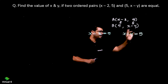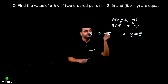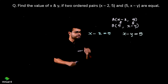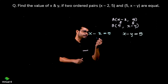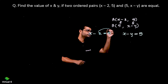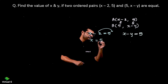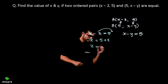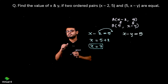We can't use the second equation directly — we need the value of x first. From the x-coordinate equation, x minus 2 equals 5. Shifting minus 2 over gives us x equals 5 plus 2, so x equals 7.